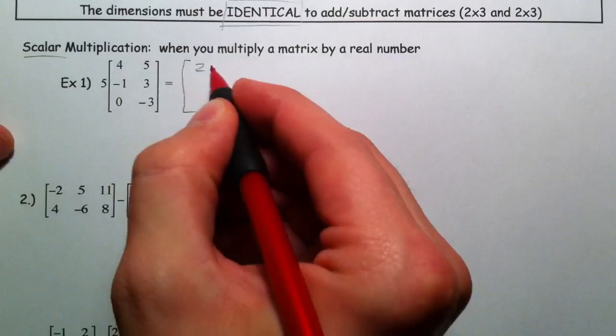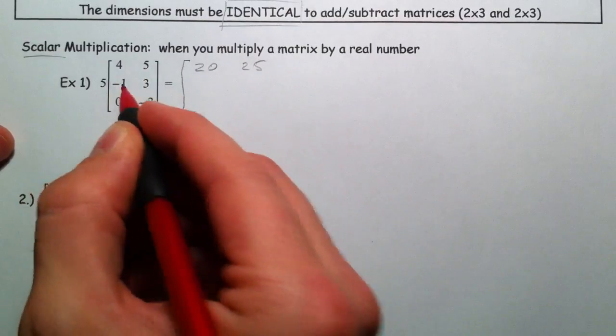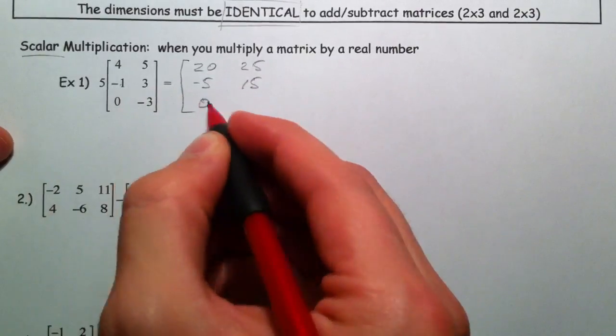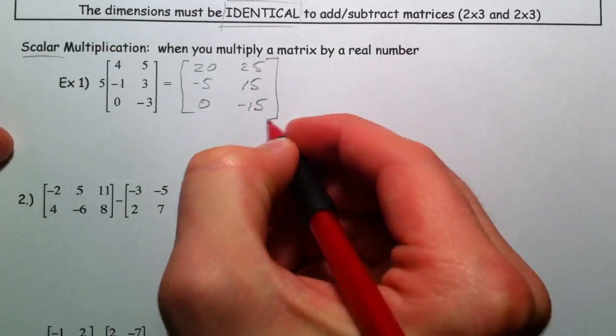So 5 times 4, 5 times 5, 5 times negative 1, 5 times 3, 5 times 0, and 5 times negative 3. That is scalar.